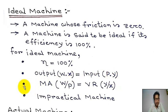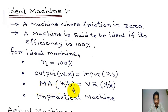For ideal machines, mechanical advantage MA equals W/P, which equals velocity ratio VR, given by y/x.